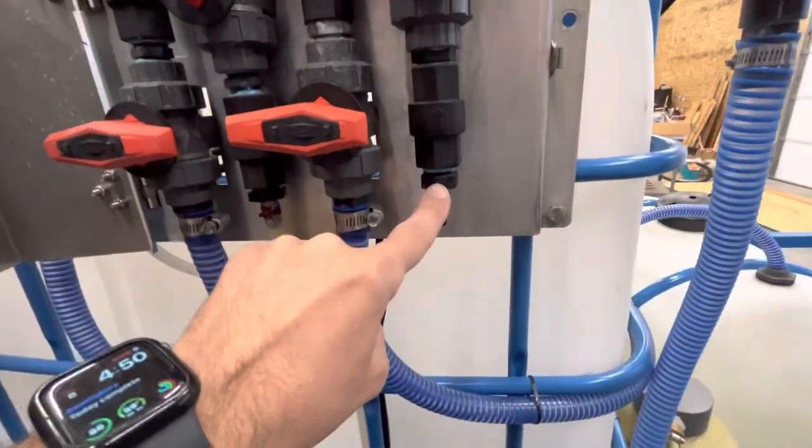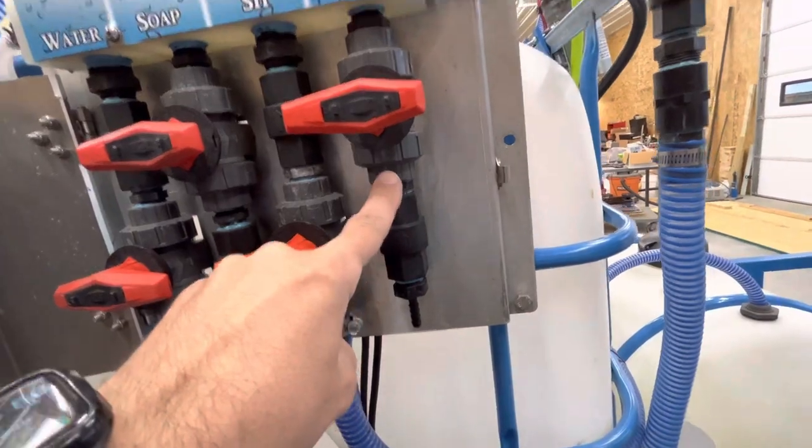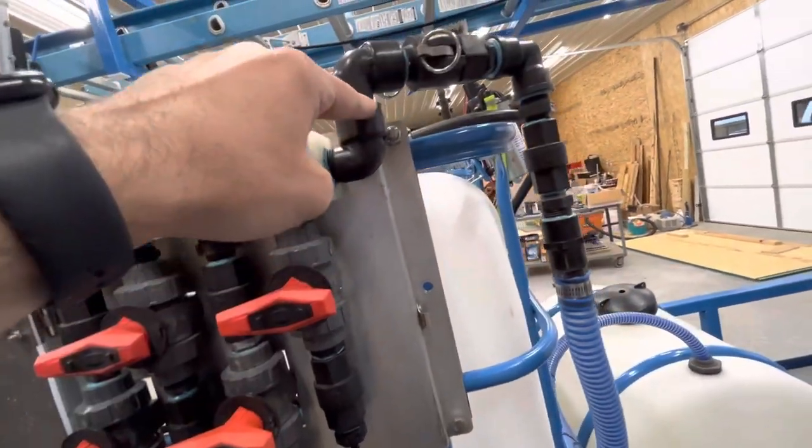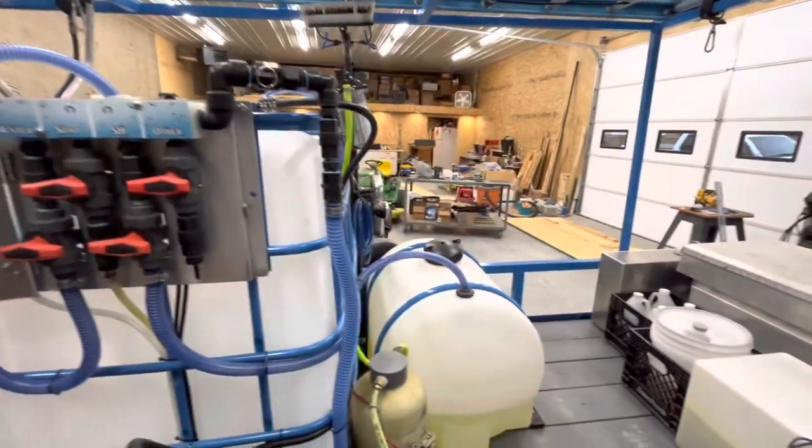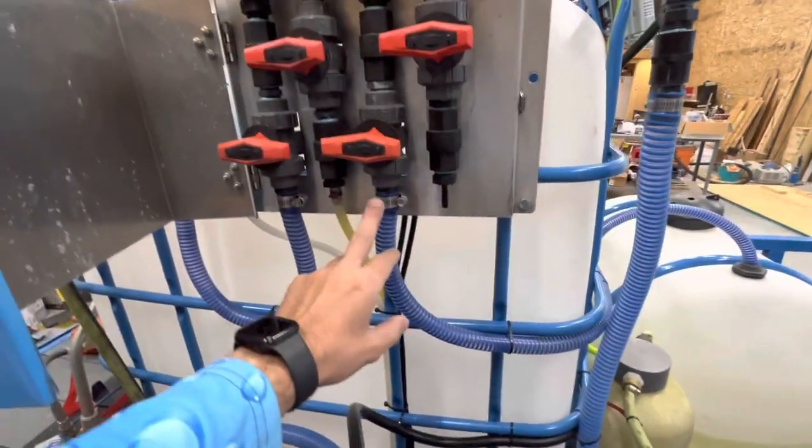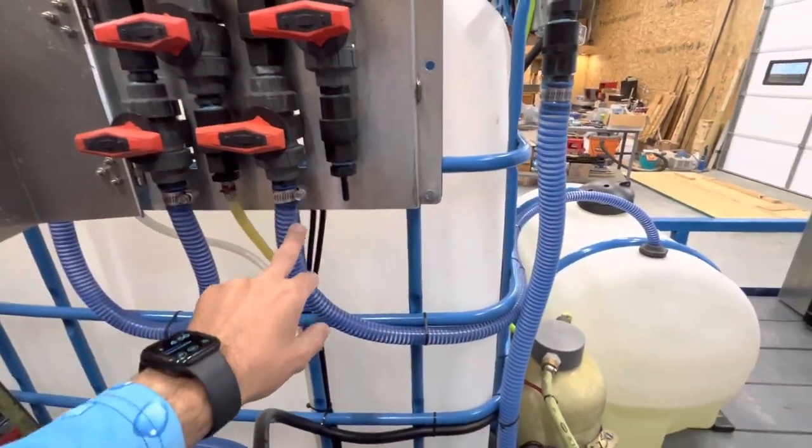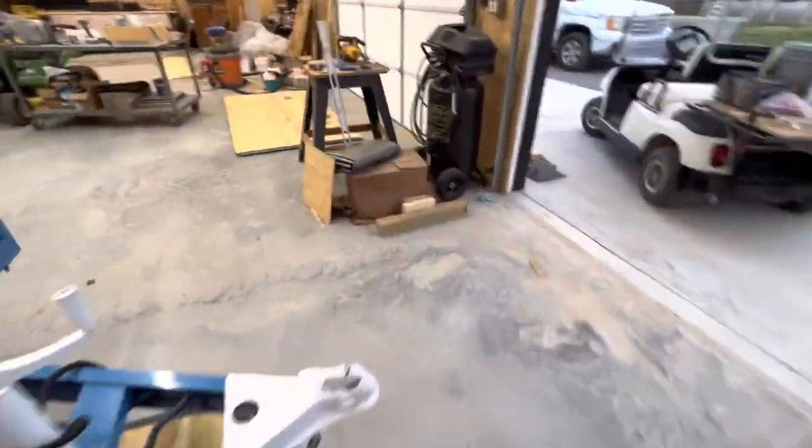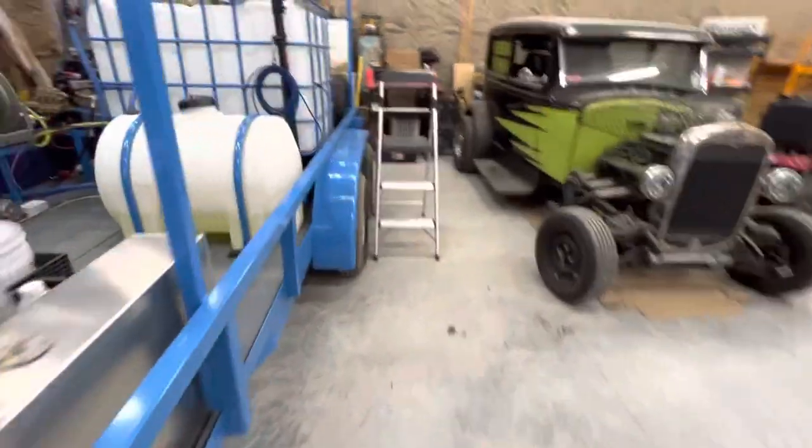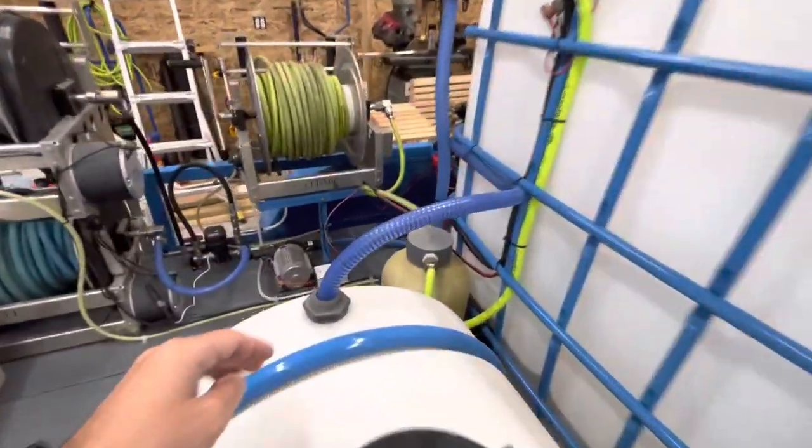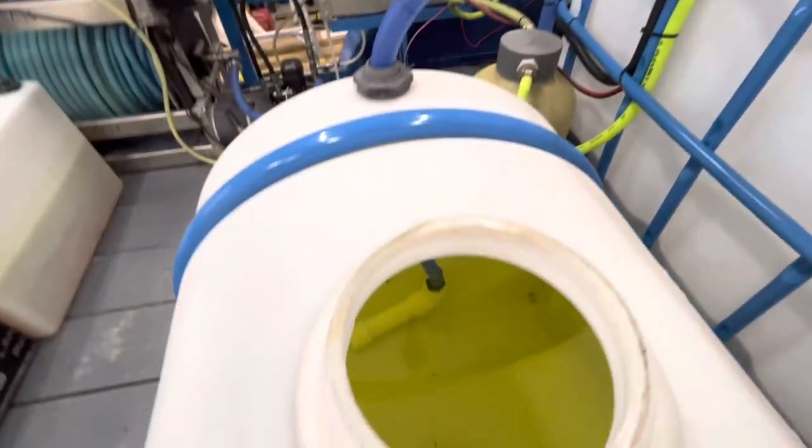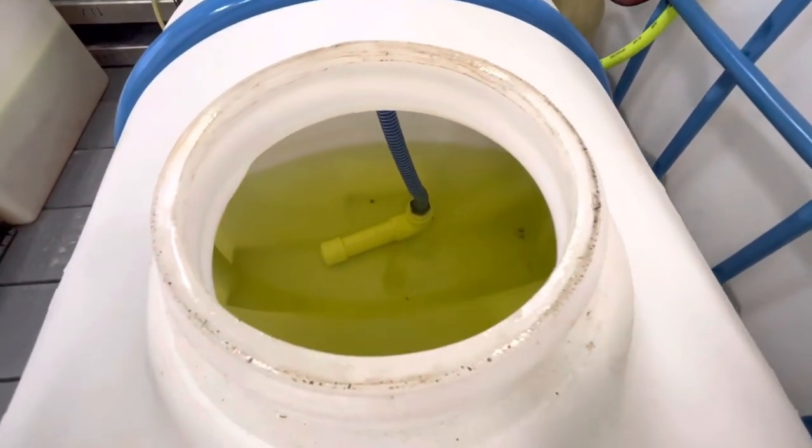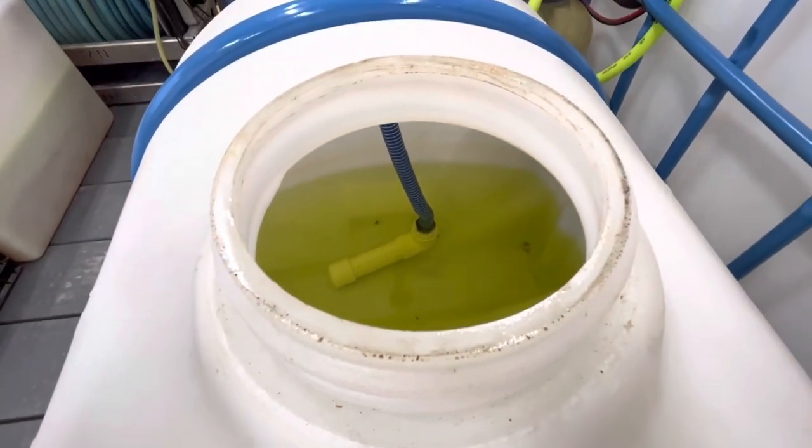Every fitting that you have, every place you've got a joint, is a potential for a leak. So what I have done on my suction side of everything is I have eliminated fittings. So coming from here, I've got one hose. Let me show you. This is my bleach hose.